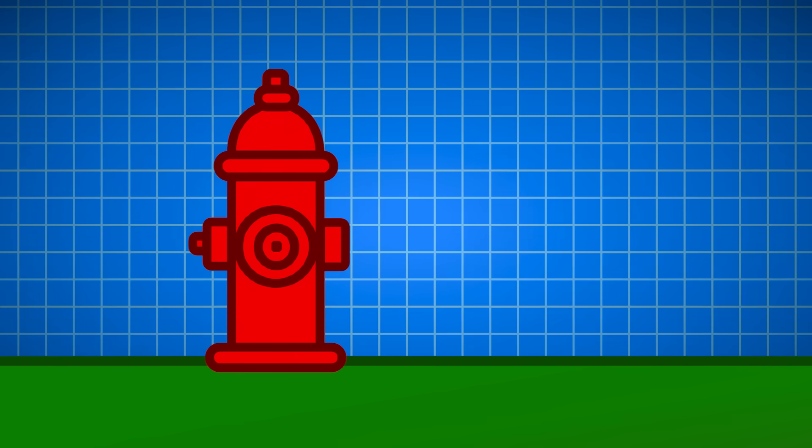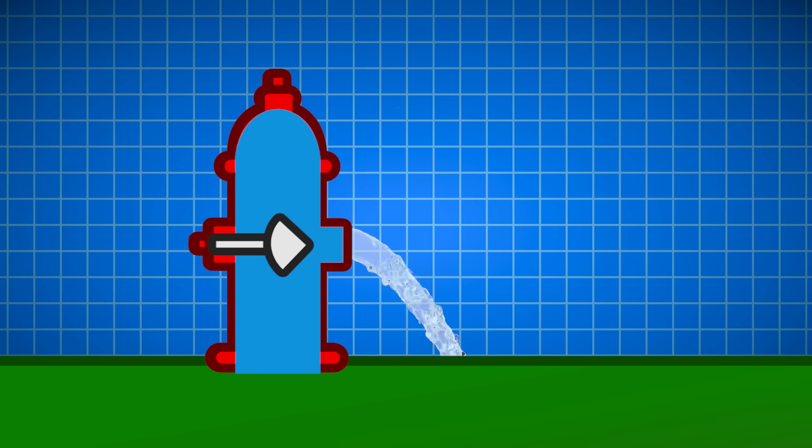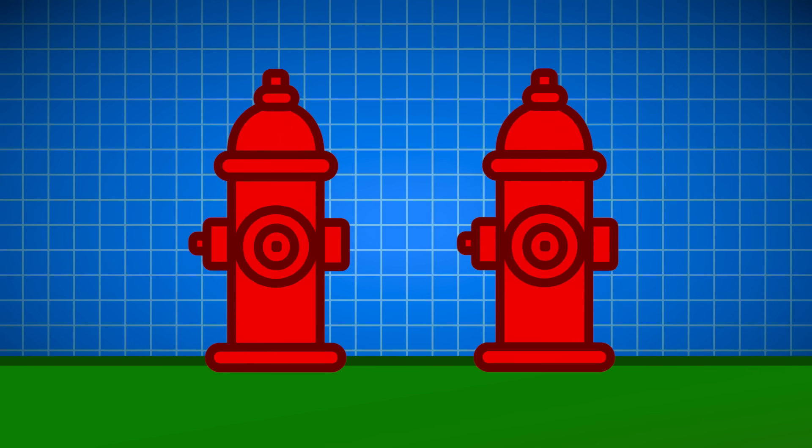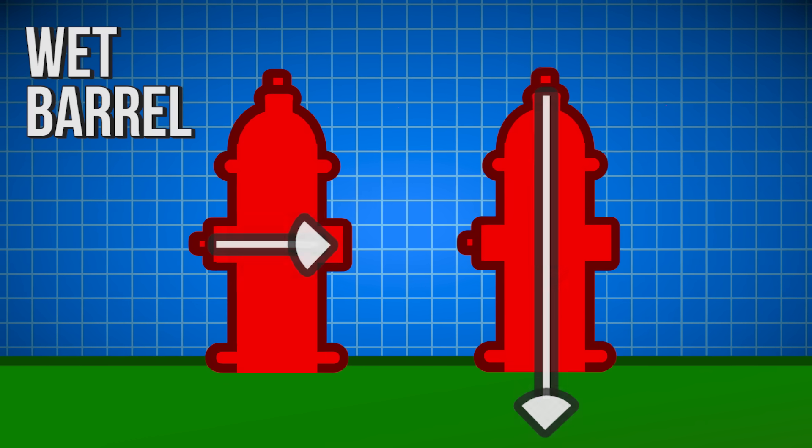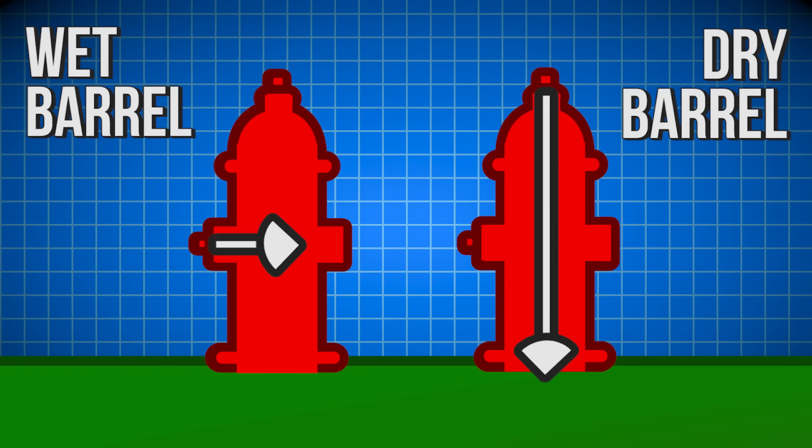While all of this may sound simple, the internal mechanics of a fire hydrant are a little more complex and can vary by region. In the US, there are two types of hydrants: wet barrel hydrants or dry barrel hydrants, which we'll focus on primarily in this video.